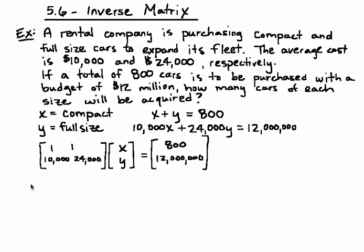And remember we are following the steps of solving the equation using the inverse. So we need to find the inverse of the first matrix. The first thing we do is find D, which is 1 times 24,000 minus 1 times 10,000. 24,000 minus 10,000 is 14,000.